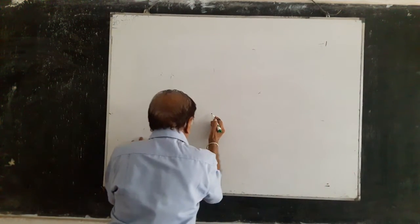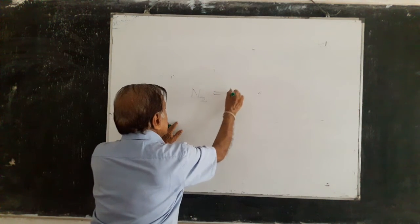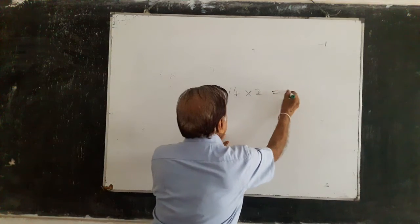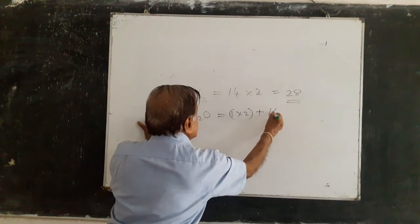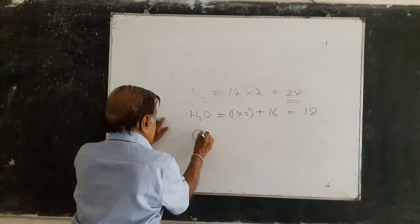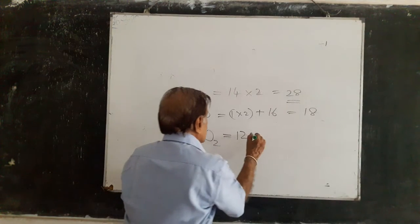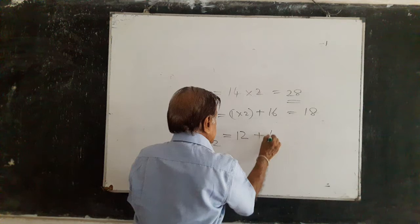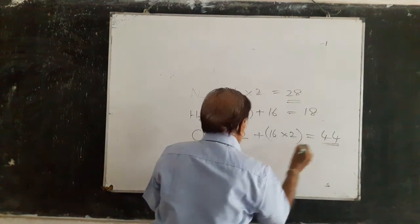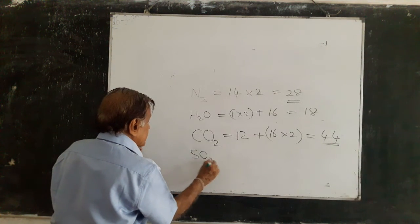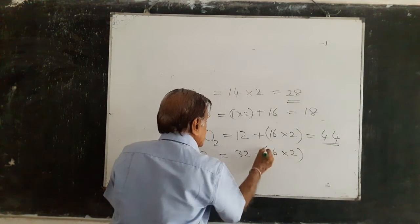Now see nitrogen — formula is N2. N is 14, times 2 gives 28. Water: 1 into 2, plus 16 equals 18. Carbon dioxide: relative atomic mass of carbon is 12, relative atomic mass of oxygen is 16, times 2 gives 32, plus 12 equals 44. Now sulfur dioxide: sulfur is 32, O is 16 times 2 equals 32, total is 64.